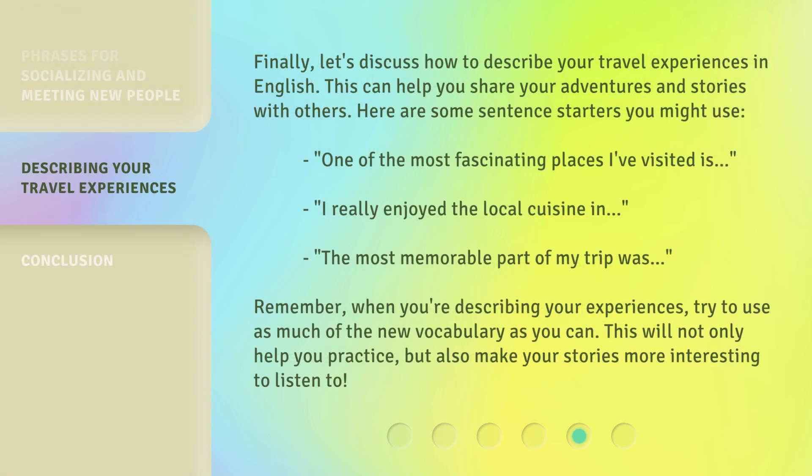Finally, let's discuss how to describe your travel experiences in English. This can help you share your adventures and stories with others. Here are some sentence starters you might use: 'One of the most fascinating places I've visited is...', 'I really enjoyed the local cuisine in...', 'The most memorable part of my trip was...' Remember, when you're describing your experiences, try to use as much of the new vocabulary as you can. This will not only help you practice, but also make your stories more interesting to listen to.